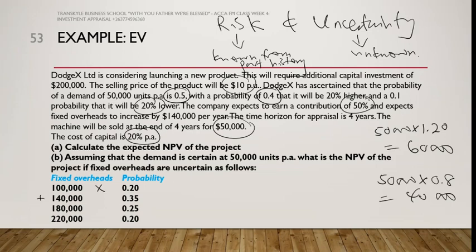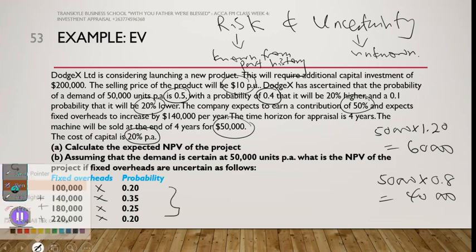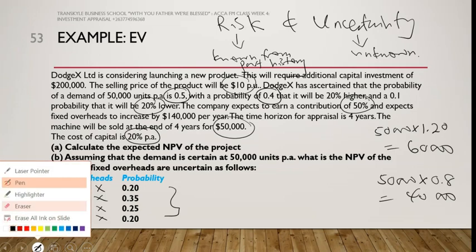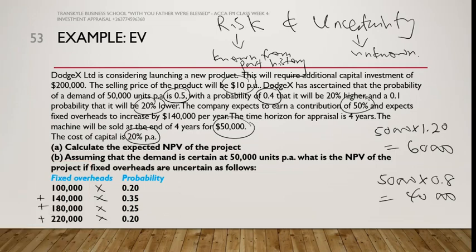We multiply each fixed cost scenario by its corresponding probability and sum them all up.